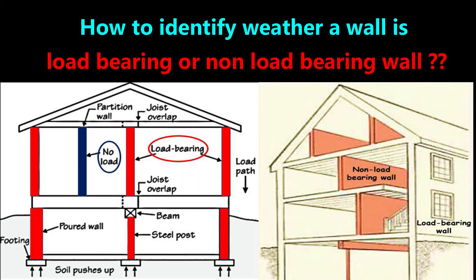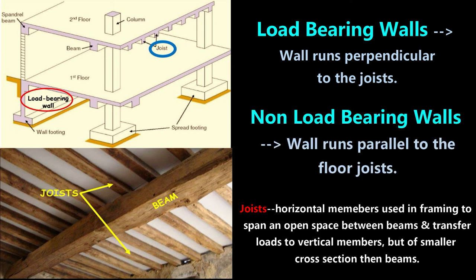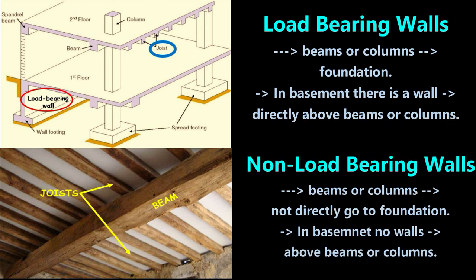Let us see how to identify whether a wall is load-bearing or non-load-bearing in a house. Generally, when a wall runs perpendicular — that is, at 90 degrees — to the joists, it is most likely a load-bearing wall. If the wall runs parallel to the floor joists above, it is considered a non-load-bearing wall. Or if there are beams or columns that go directly into the foundation, check to see if these beams or columns interface directly with any basement walls — if they do, those are load-bearing walls.